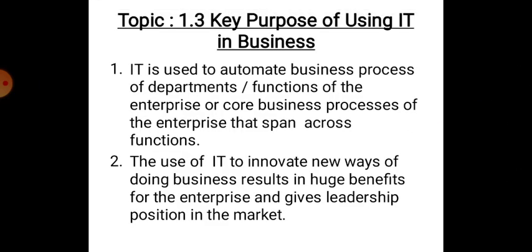The first point is IT is used to automate business processes of departments or functions of the enterprise, or core business processes of the enterprise that span across functions. In the previous class we tried to know what are various business processes or functions, and to automate all these business processes and functions we use information technology.